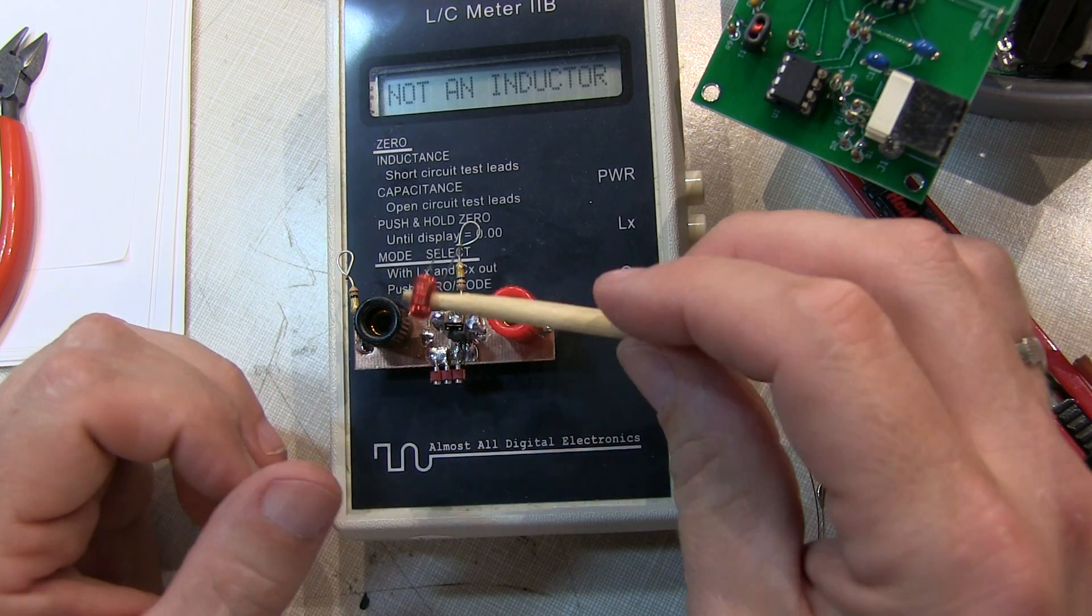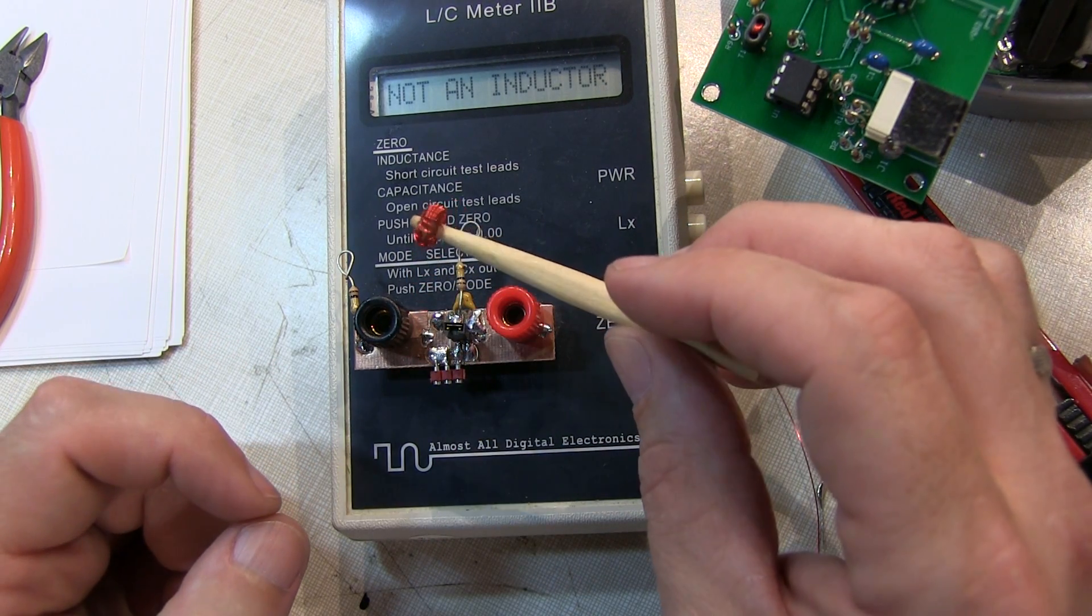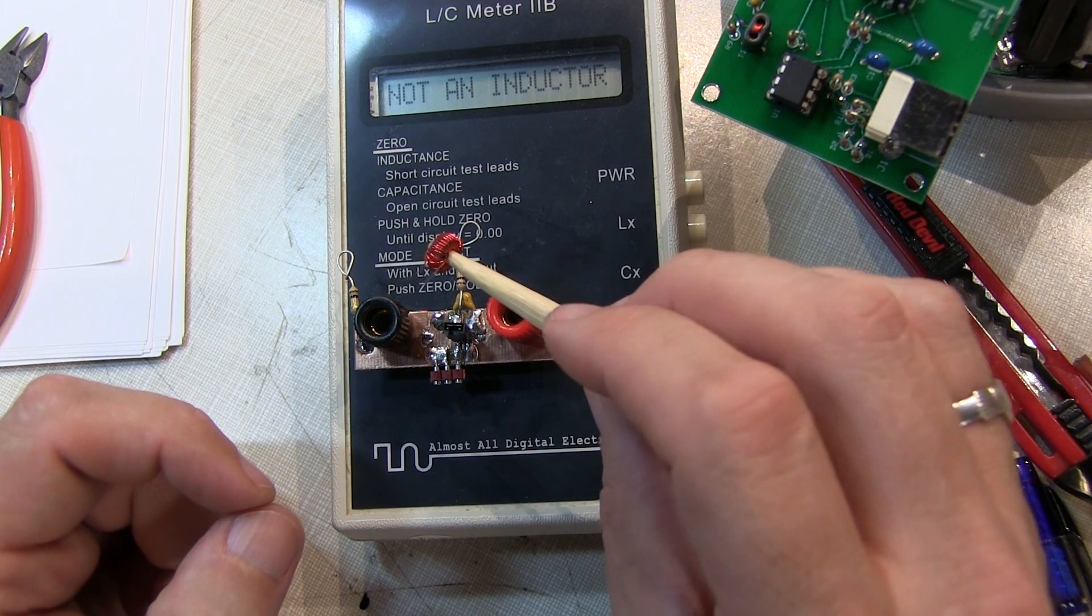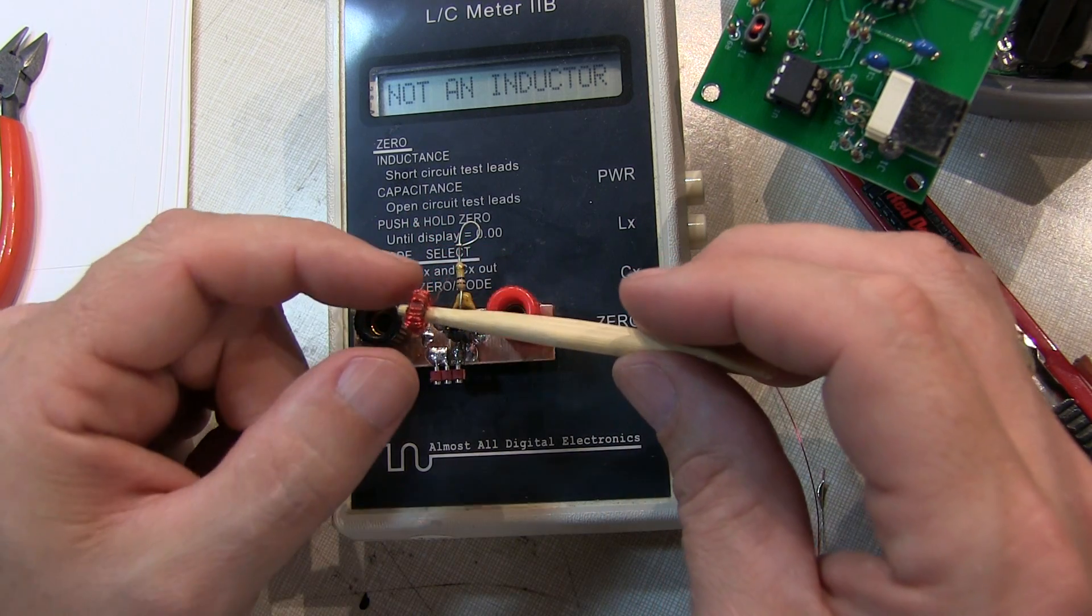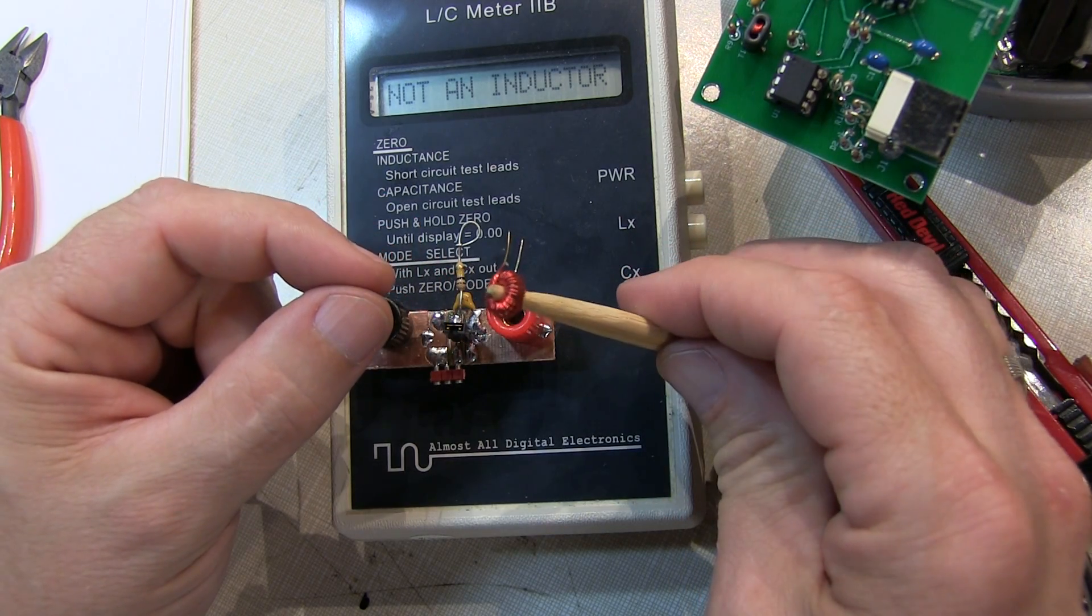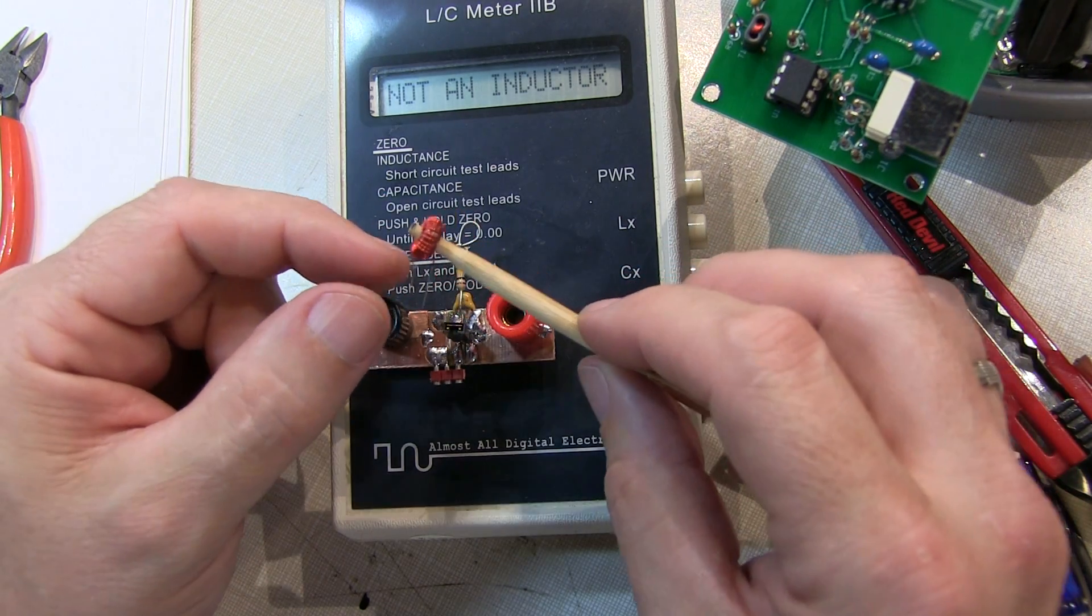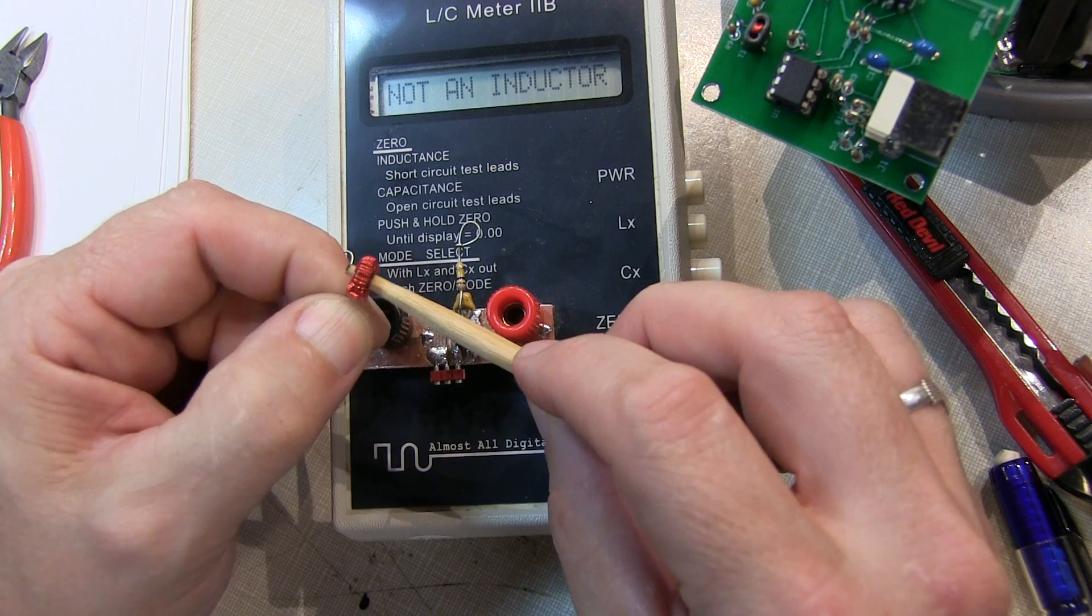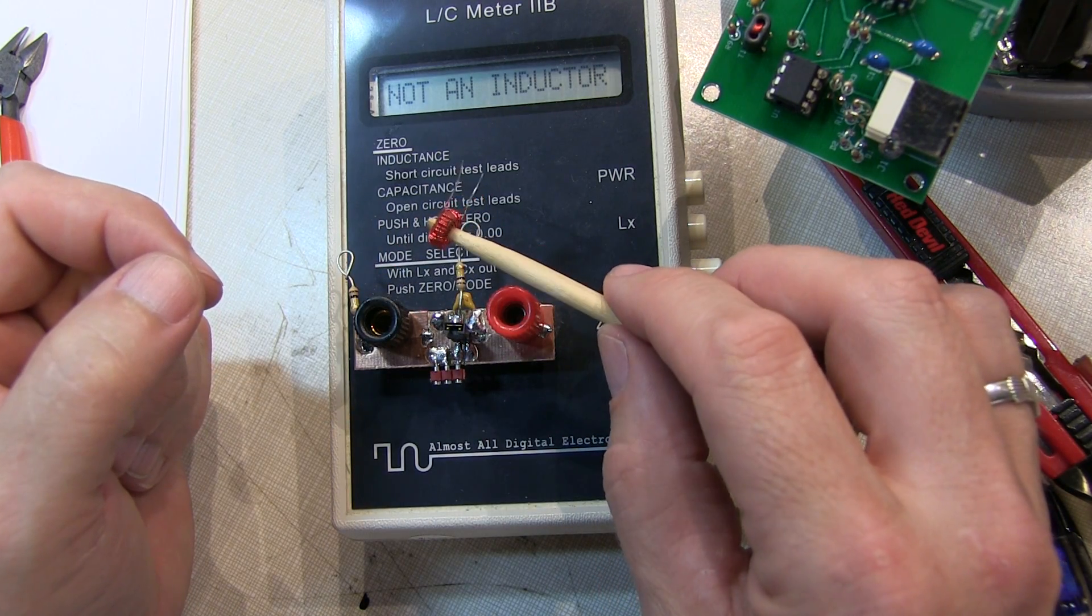So that one inductor is done. I've only got about another 10 or 12 to do for this kit. So yeah, I hope you enjoyed the video, learned a little something about how to wind a toroidal inductor, some of the precautions you might want to take and methods you could use. And thanks again for watching.